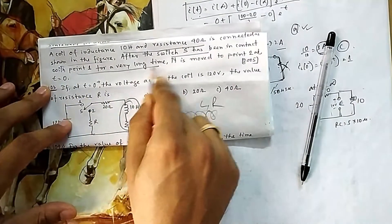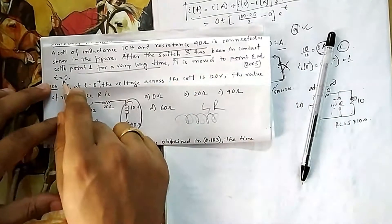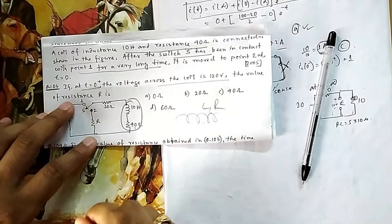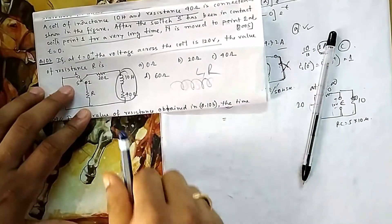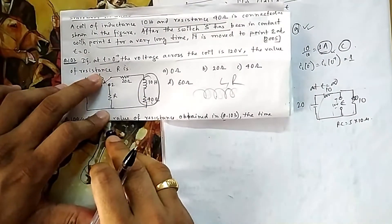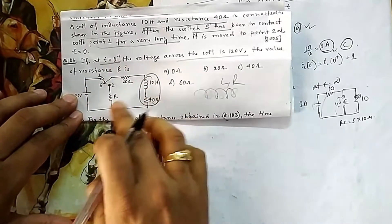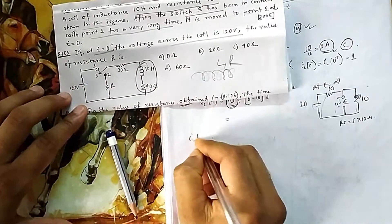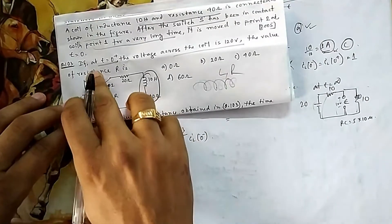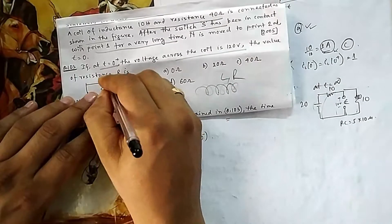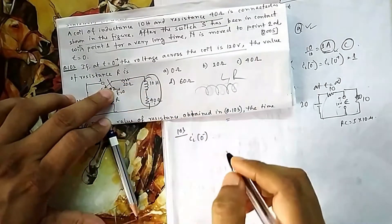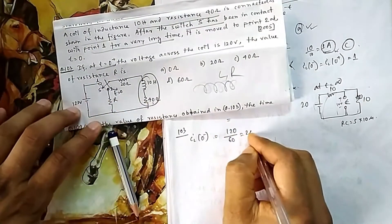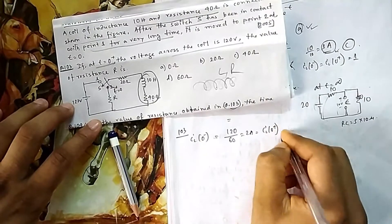The switch has been in contact with position 1 for a long time and is moved to position 2 at t equal to 0. At t equal to 0 plus, the voltage across the coil is 120 volts and we need to find resistance R. Since connected at position 1 for a long time, the inductor is short-circuited, so i_L(0−) = 120 / (20 + 40) = 2 ampere.